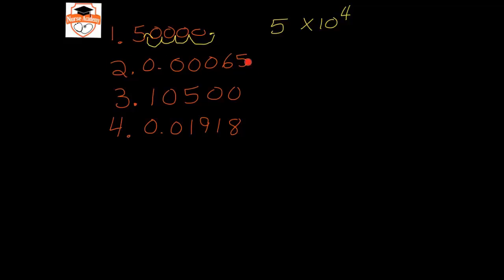For the second example, I write the first non-zero digit, which is 6, with only one digit in front of the decimal place, giving 6.5 times 10. This number is smaller than 1, so to find the exponent I move the decimal place 1, 2, 3, 4 positions. Since the value is smaller than 1, the sign is negative, giving 6.5 times 10 to the negative 4.